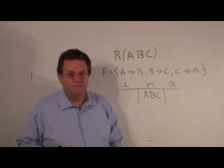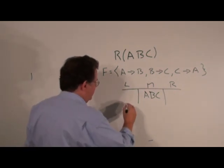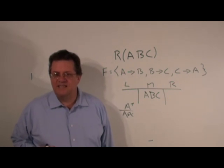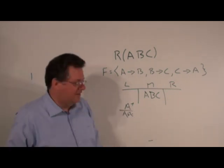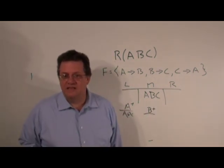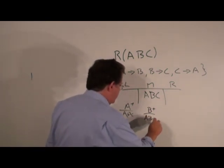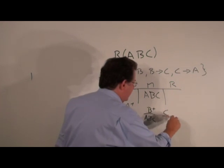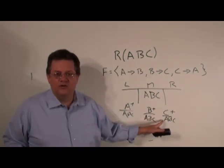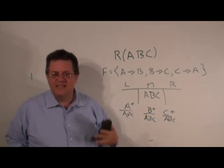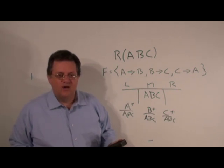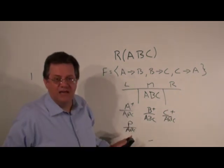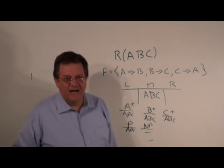Let's try the closure of A. We know A determines B, B determines C, so the closure of A is A, B, C — A is a key. Now let's try the closure of B. B determines C, C determines A, giving us A, B, C — B is also a key. And the closure of C gives C determines A, A determines B, yielding A, B, C — so C is also a key. That means A, B, and C are all keys. In terms of prime and non-prime attributes: prime attributes are A, B, C, and there are no non-prime attributes.